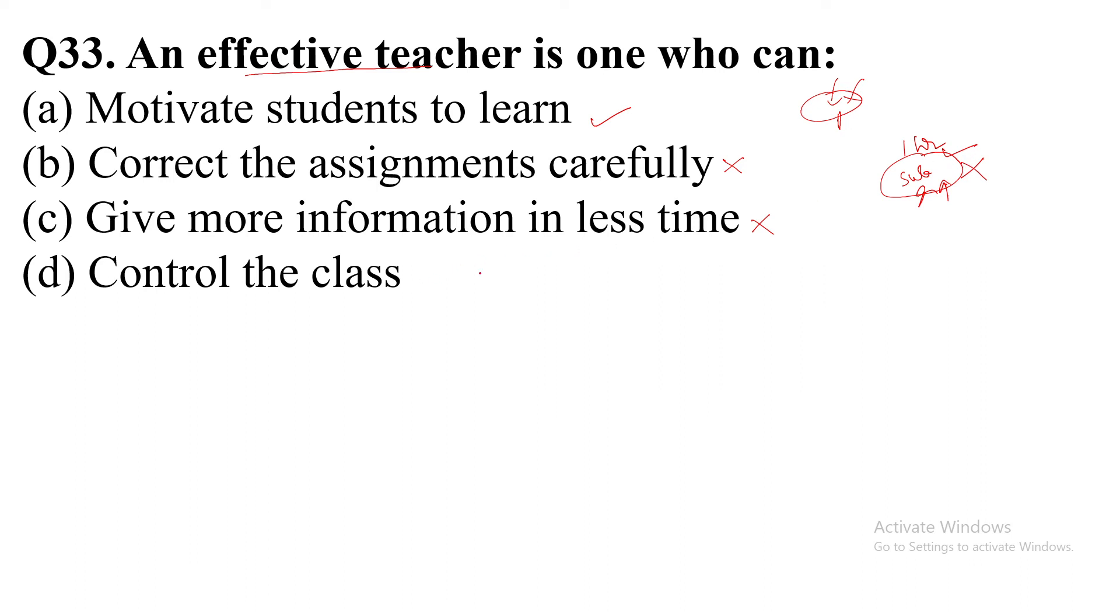Option D, control the class. Strict, controlling the class, but if nothing is taught, then this cannot be correct either. This is also not the quality.